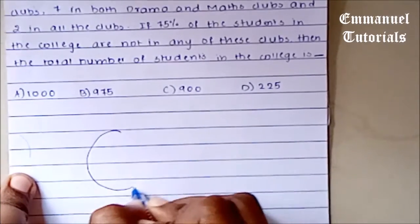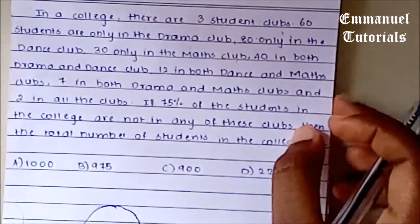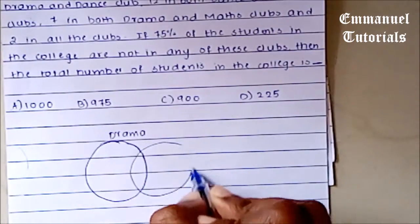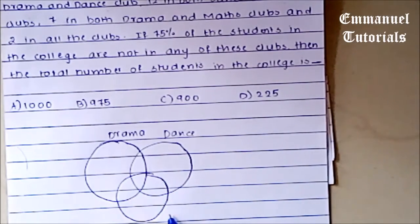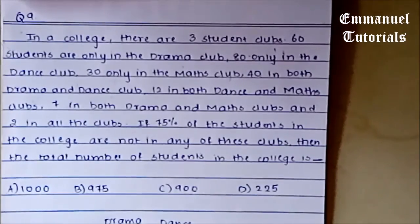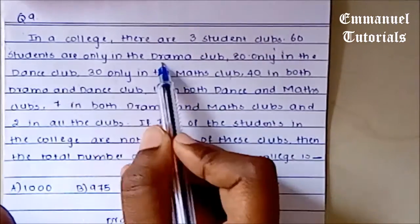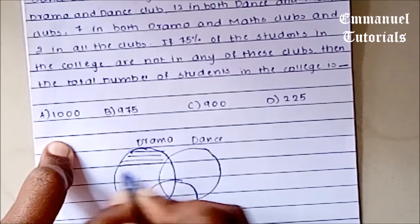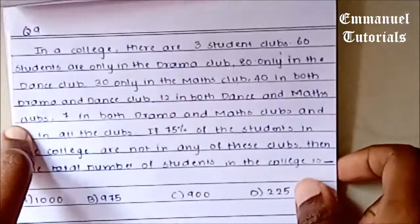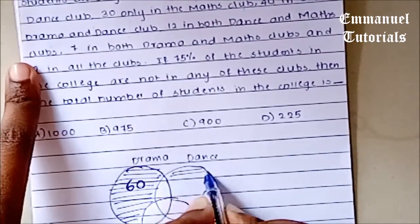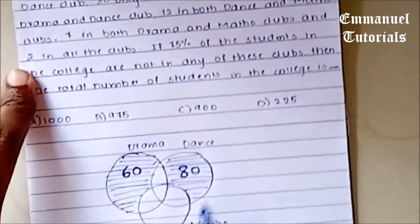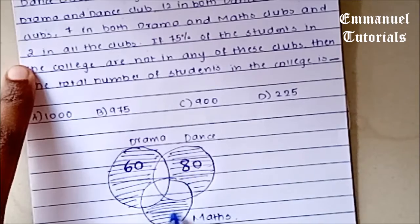We can have one circle for the drama club, one for the dance club, and one for the maths club. Going through the question again: 60 students are only in the drama club — so this part is 60. 80 are only in the dance club — so this is 80. And 30 are only in the maths club — so this is 30.